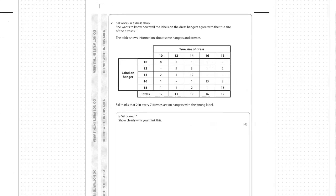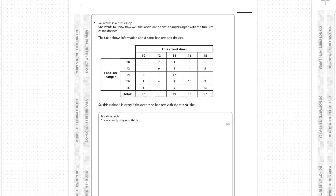Sal works in a dress shop. She wants to know how well the labels on the dress hangers agree with the true size of the dresses. The table shows information about some hangers and dresses. We've got a two-way table there, so the columns are the true size of the dress when you take it off the hanger, and the rows are the label on the hanger. At the bottom there we've got totals for each of the sizes of dresses.